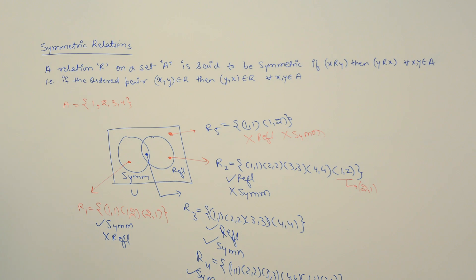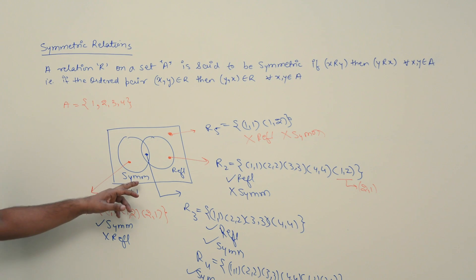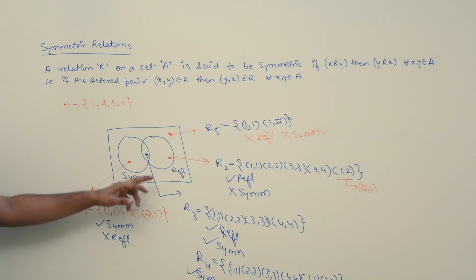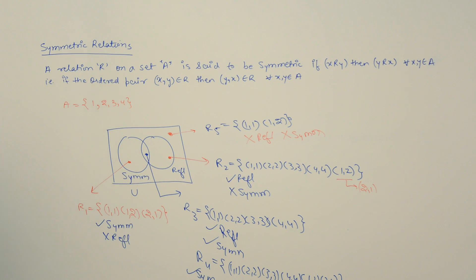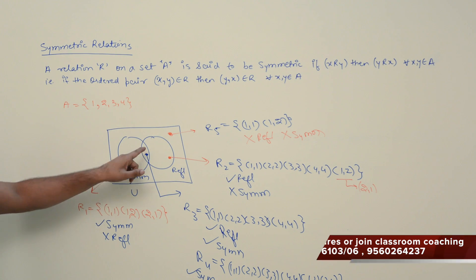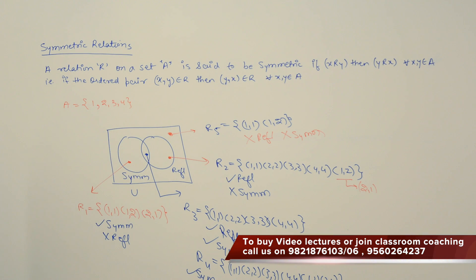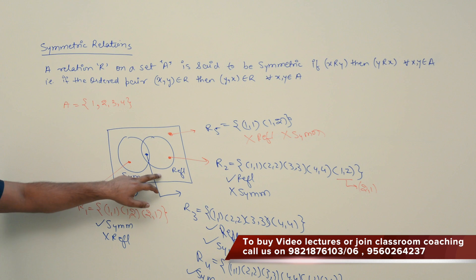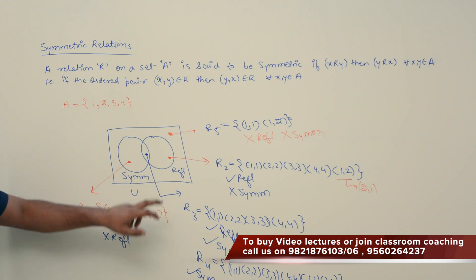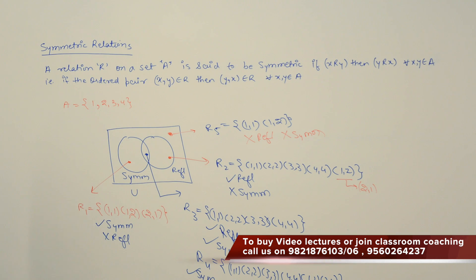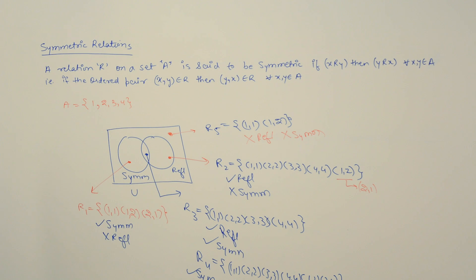Now, can you tell me: what are the number of relations which are symmetric, which are reflexive, which are both symmetric and reflexive, and which are neither symmetric nor reflexive? Try to think about it.